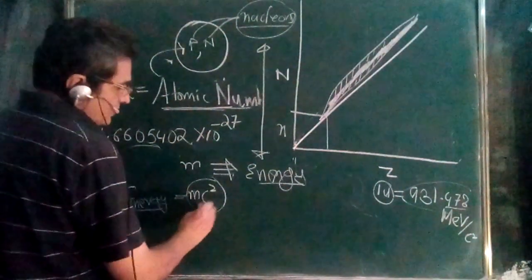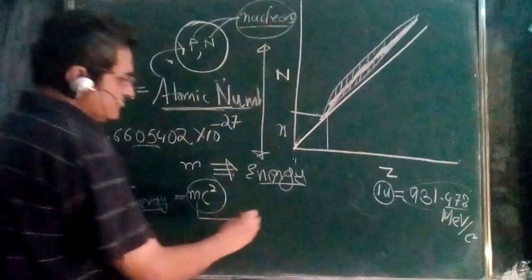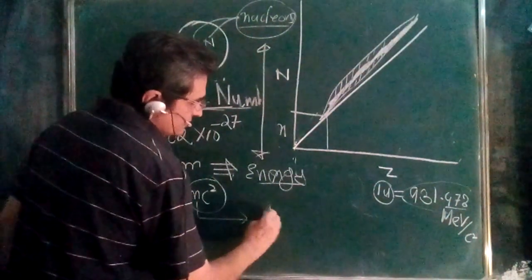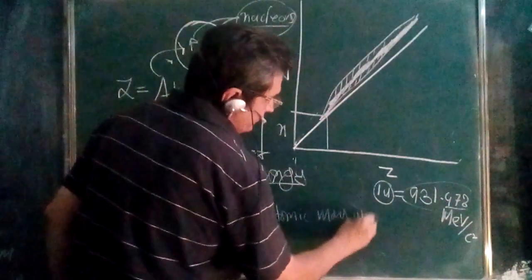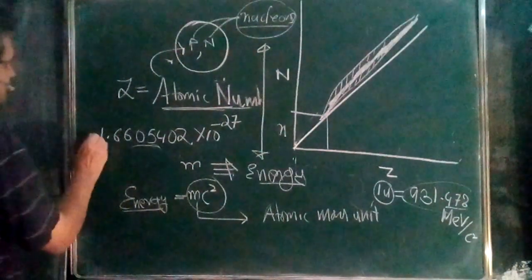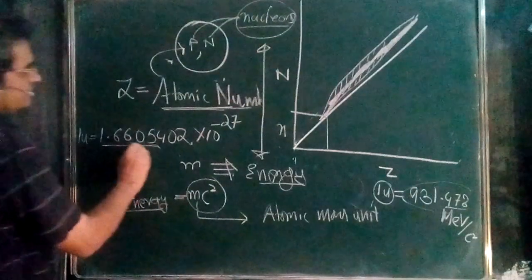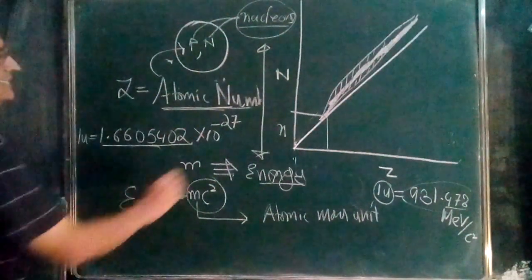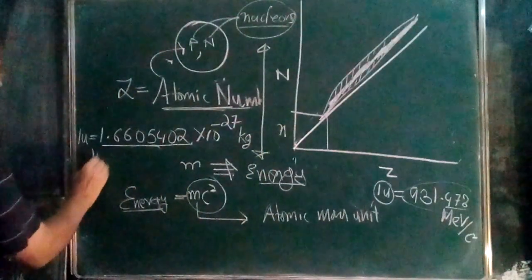Generally in problems, mass is given in terms of atomic mass units. One atomic mass unit is written as 1u and equals 1.6605402 × 10⁻²⁷ kg. This is one-twelfth of the mass of a carbon atom.